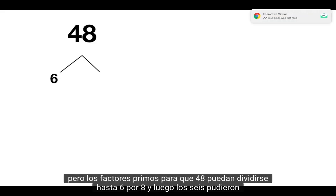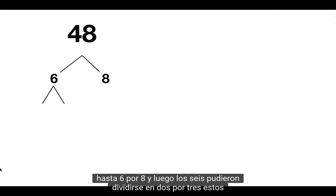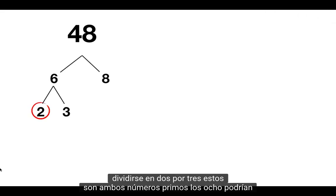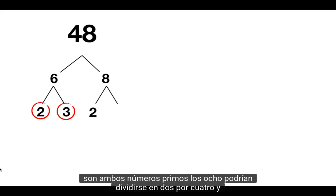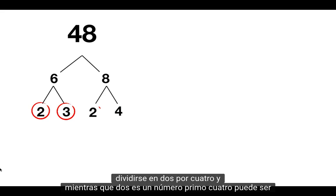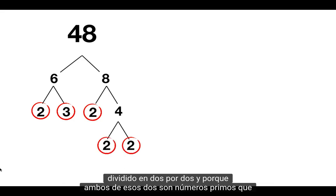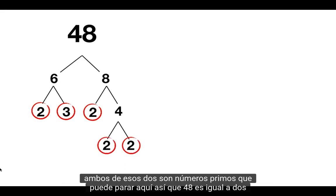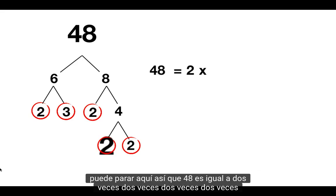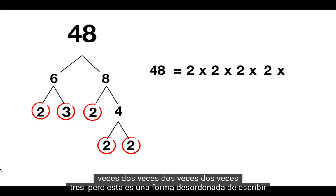So 48 could be split up into 6 times 8. Then the 6 could be split up into 2 times 3 — both prime numbers. The 8 could be split up into 2 times 4. While 2 is a prime number, 4 can be split up into 2 times 2. And because both of those 2s are prime numbers, we can stop here. So 48 is equal to 2 times 2 times 2 times 2 times 3.